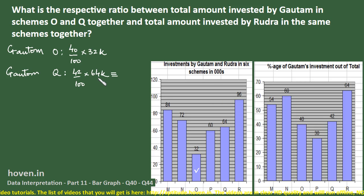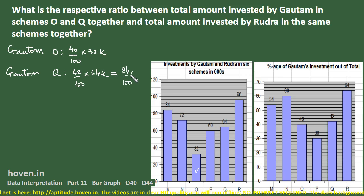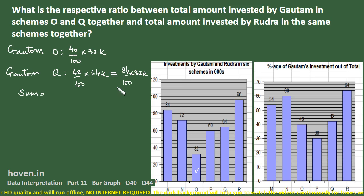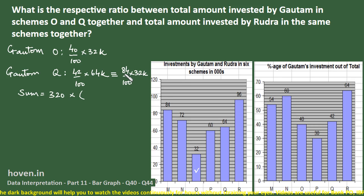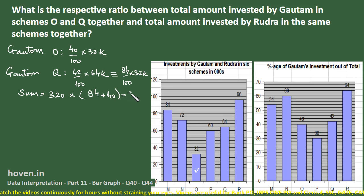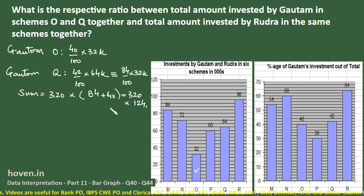Adding Gautam's investments: 32K/100 is common. Since K = 1,000, this gives 320 as the common factor. Total Gautam = 320 × (84 + 40) = 320 × 124. Keep it factored since 320 will also be common for Rudra, allowing cancellation in the ratio.